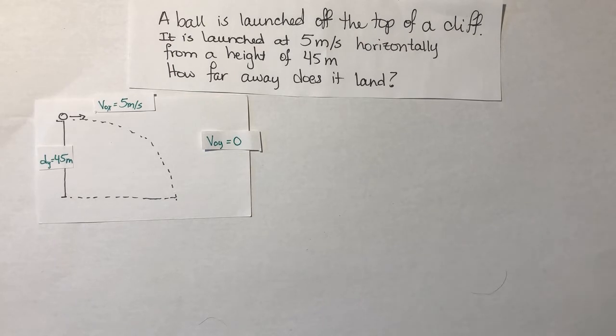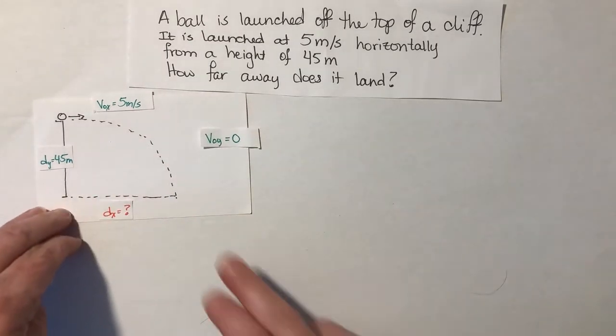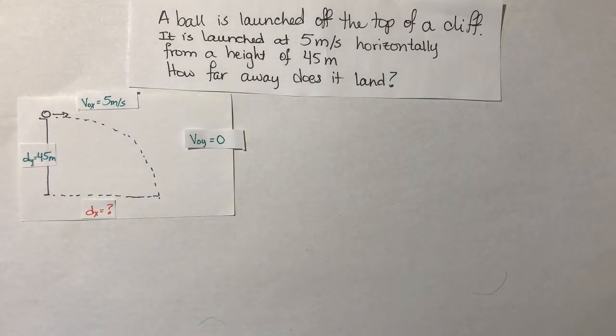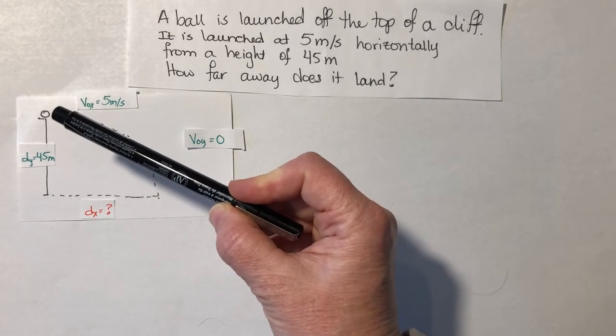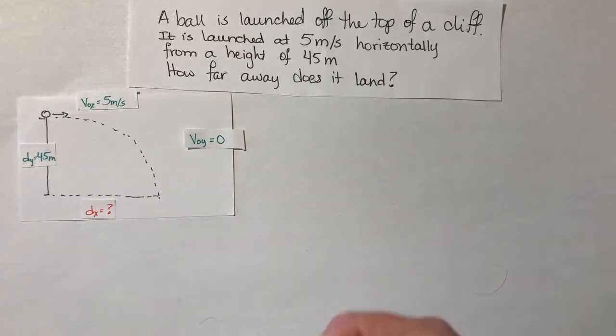And so the question is asking how far away does it land? So that's my unknown. I'm going to label my unknown on my diagram here with dx. dx equals question mark. Okay, so now that we've established what we know and what we don't know, this is going to be a two-step problem. One thing that's very important, and that was in the flipping physics videos I asked you to watch, talks about that the amount of time that it will take the ball to hit the ground is the same, whether the ball is dropped straight down or the ball is launched horizontally. Regardless, time is the same. So step one for this problem is going to be find time.